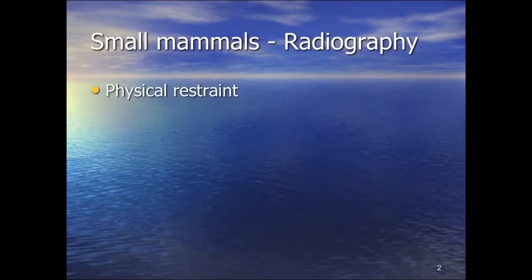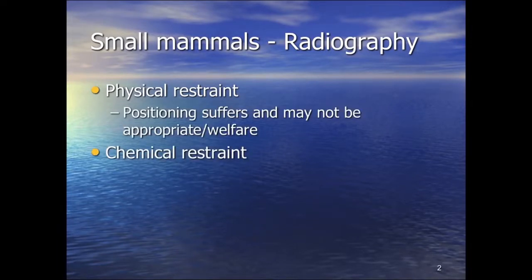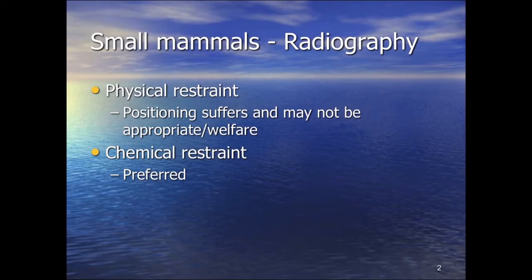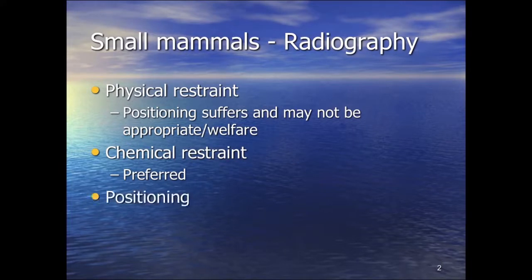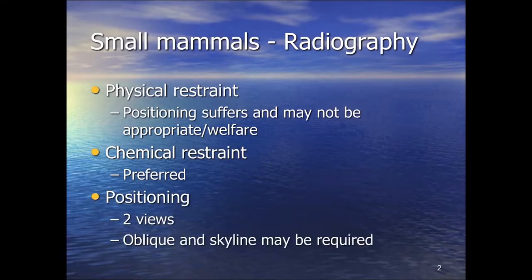We'll look at small mammal radiography in the first instance. Obviously, positioning as with anything to do with diagnostic imaging is all important, and interpretation of radiographs is incredibly difficult with potentially incorrect positioning. Chemical restraint really is preferred in the majority of cases. You may be able for certain diagnostic purposes, such as to prove gravidity, to get away with poor positioning and therefore maybe physical restraint or just trusting the animal not to move while you take the radiograph in the case of some reptiles, but otherwise we're looking at ideally wanting to immobilize them.